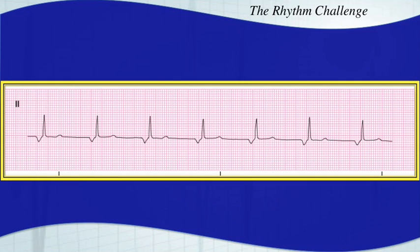The answer is an ectopic atrial rhythm. If you said it was a junctional rhythm, I wouldn't take any points off — you do have inverted P waves. The PR interval just isn't short enough to really call it a junctional rhythm. It's going to pretty much require the same type of treatment, which isn't a whole lot pre-hospitally.